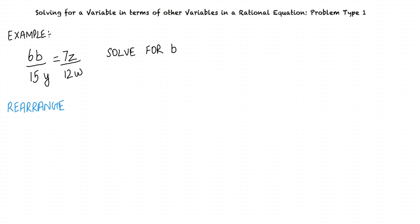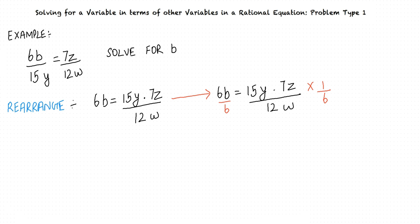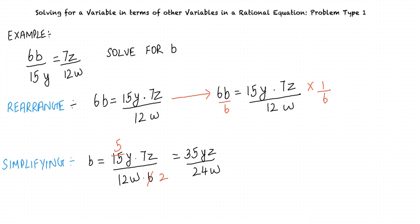The first step is to rearrange the equation. We are required to solve for b. Rearranging the equation accordingly, we get 6b equals 15y times 7z divided by 12w. Next, we divide both sides by 6. The equation becomes b equals 15y times 7z divided by 12w times 6. Finally, we simplify the expression to solve for the required variable. Simplifying, we get b equals 35yz divided by 24w.